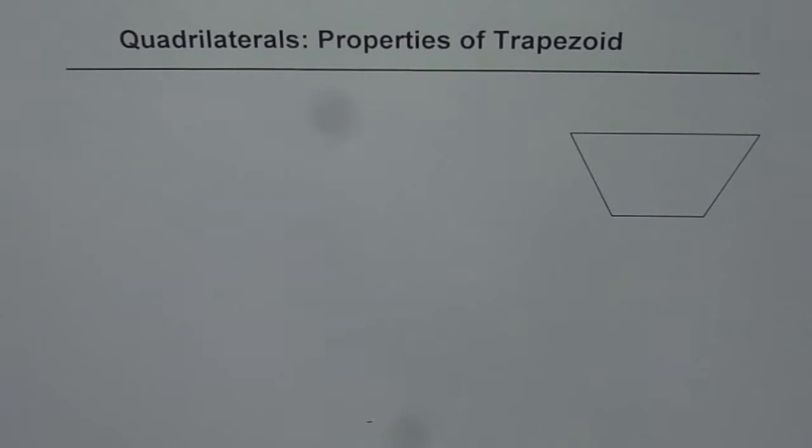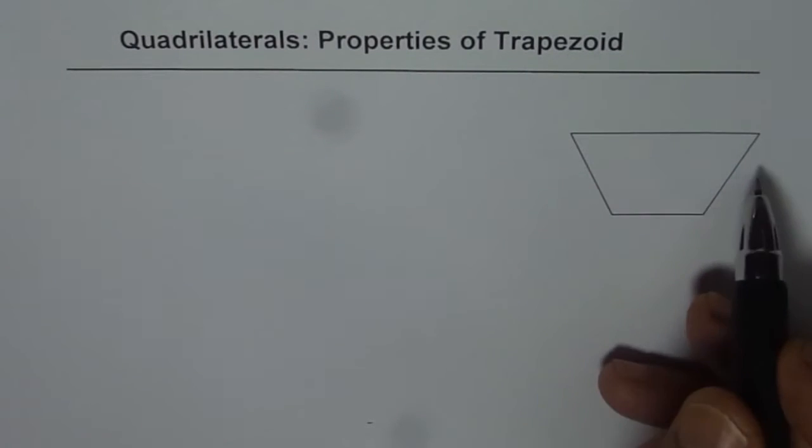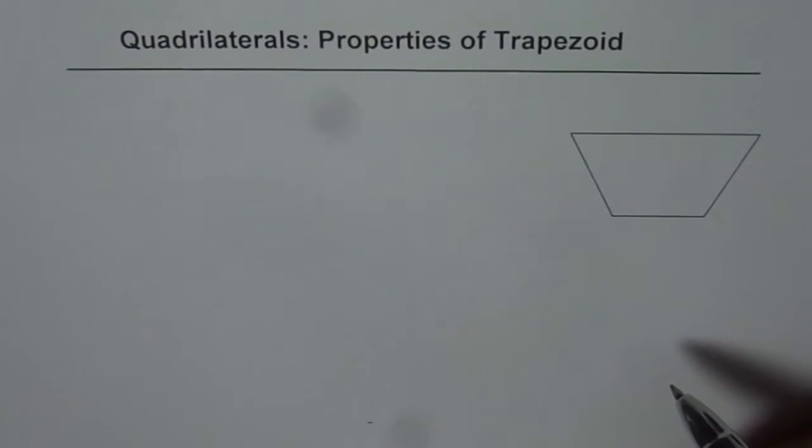I am Anil Kumar and in this video we will learn about properties of trapezoid. It is a quadrilateral and here is one drawn for you. It has four sides and therefore it is a quadrilateral. Any four-sided figure is a quadrilateral. Now what is so special about trapezoid?